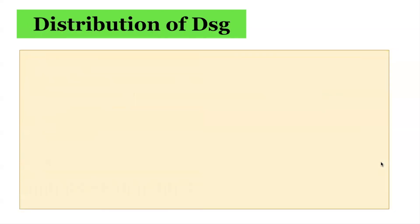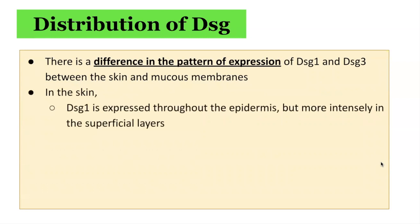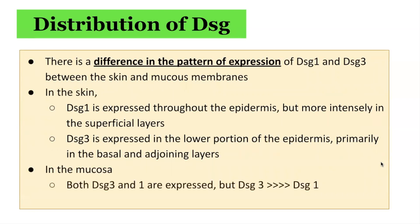In terms of the distribution of the Desmogleins, there is a difference in the pattern of expression of DSG1 and DSG3 between the skin and mucosal membranes. In the skin, DSG1 is expressed throughout the epidermis but is more intensely expressed in the superficial top layers. DSG3 is expressed in the lower portion of the epidermis, primarily in the basal layer and just above it. In the mucosa, however, both DSG3 and DSG1 are expressed, but all throughout the mucosal layer, DSG3 expression is predominant over DSG1.